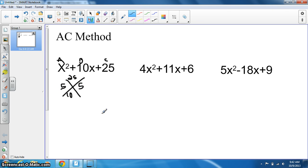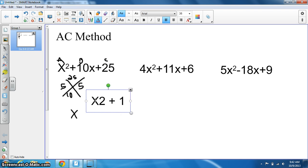With that, we rewrite our equation, substituting these two numbers, 5 and 5, in for B. So we rewrite our equation as x² plus 5x plus 5x plus 25.